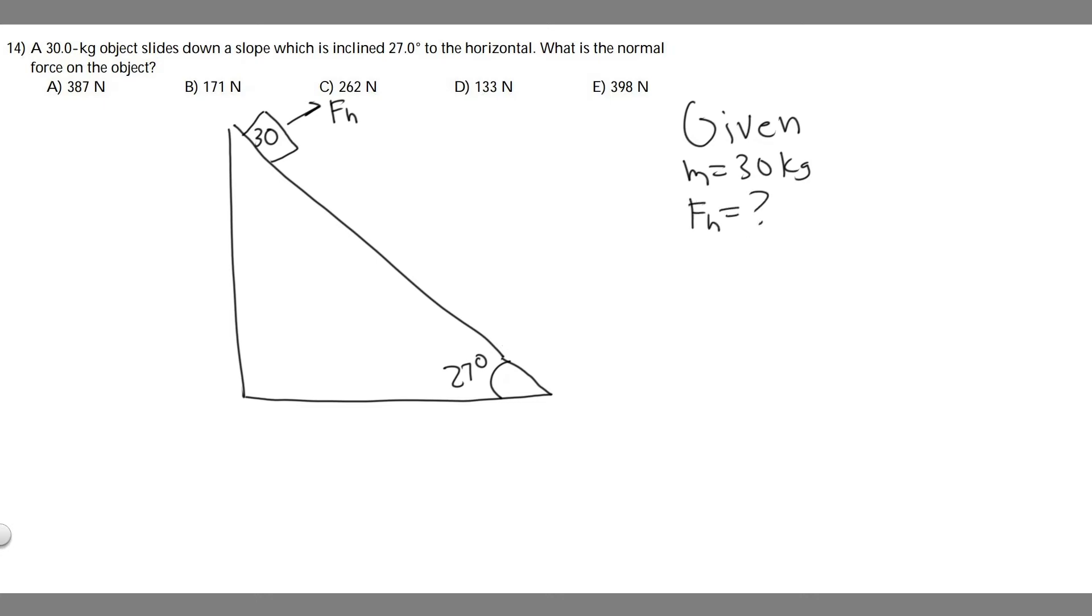Keep in mind that F sub n is always perpendicular to the force or the object that it's touching. So in this case since it's on the slope like this, the F sub n is gonna be this way.